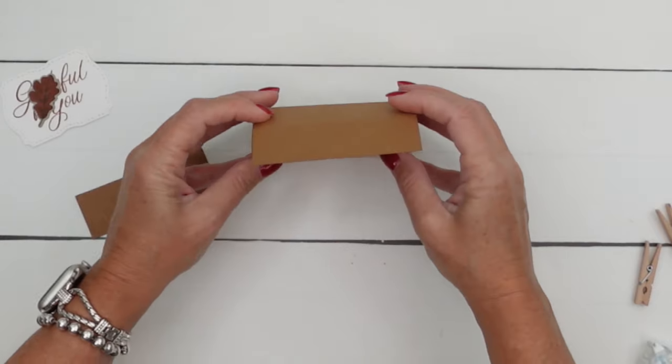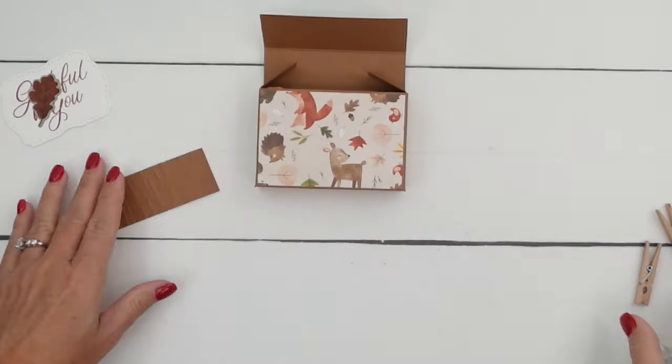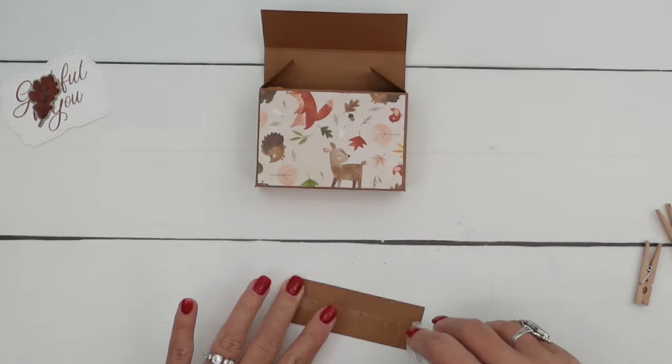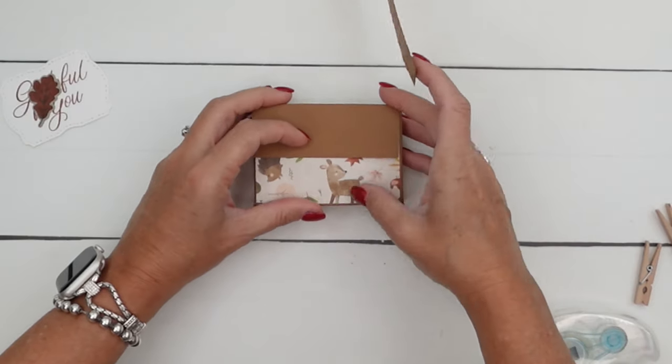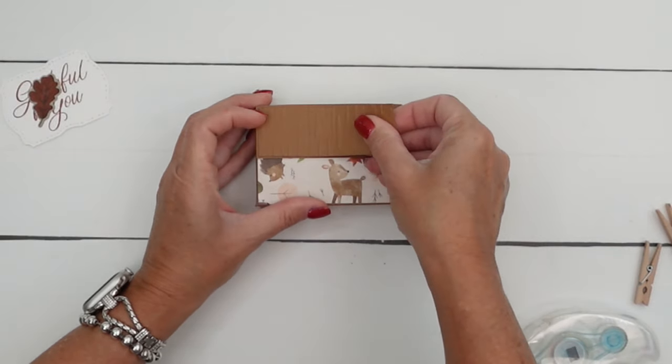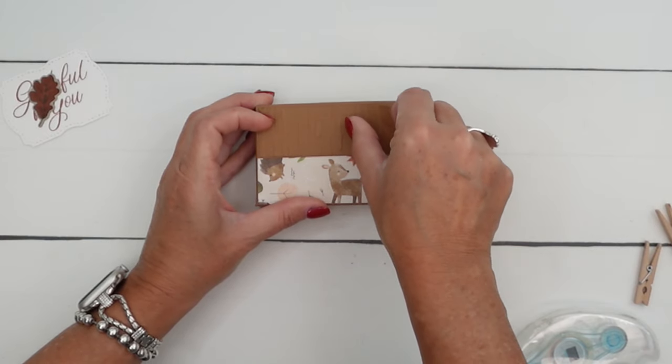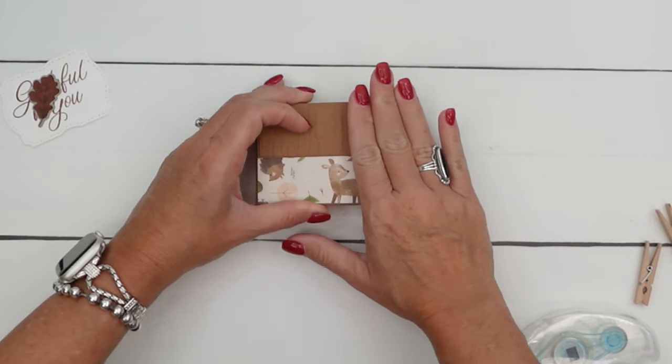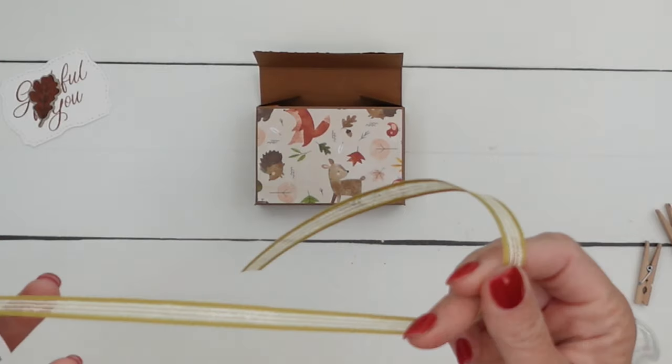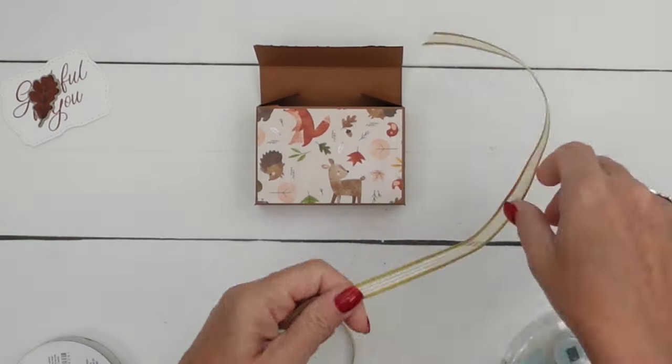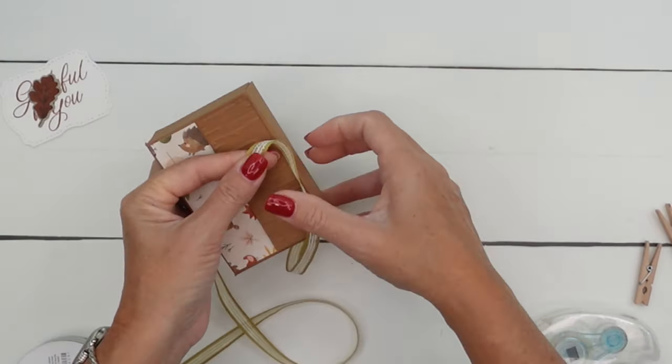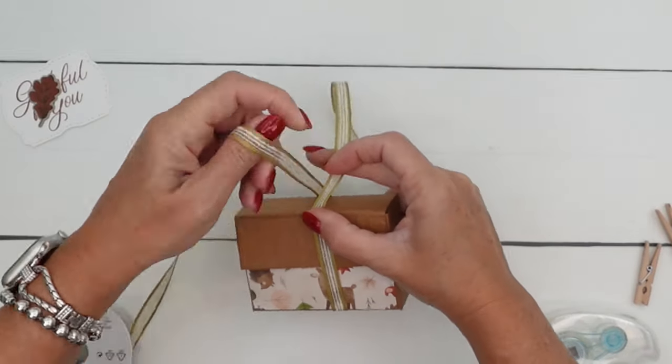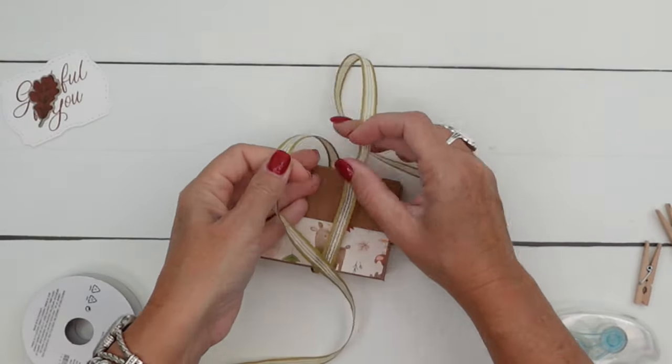And then we're going to put that embossed piece right there. And then we've got gold, beautiful gold ribbon. We're going to sandwich this ribbon behind the tag. So make sure you do the ribbon before you adhere the tag.